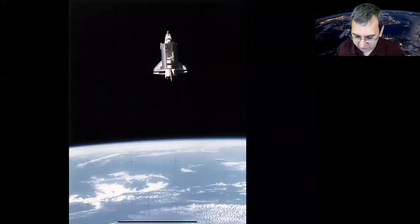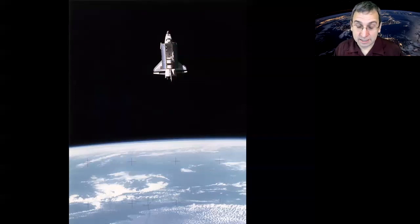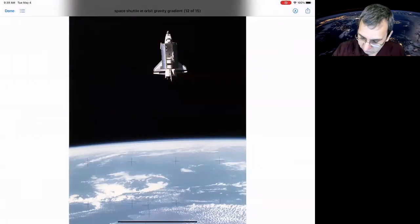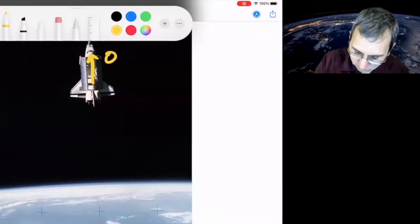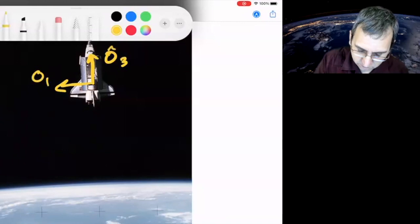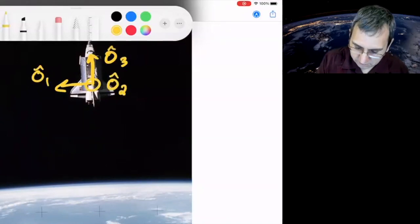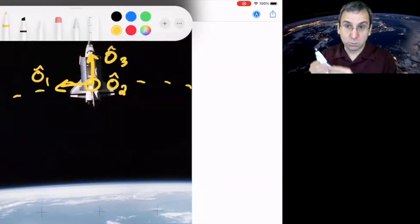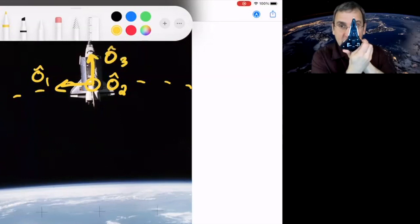There's even a picture of the space shuttle. It shows it in space in its gravity gradient configuration where the orbit is moving. Can I draw in here? This is O3, and then this is O1, and then coming out at us is O2. So it's like going along like that. That's one of the four stable attitudes, right? Because you could flip it around.